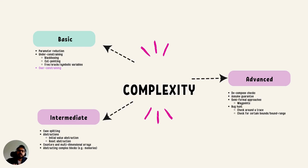Formal verification can be really complex and a time-consuming process, especially if the design is very big and complex. There are a number of techniques that you can use to reduce the complexity of designs while doing formal verification. I'm broadly dividing them into three categories: basic, intermediate, and advanced. In the last two videos we discussed four basic techniques: parameter reduction, cut pointing, black boxing, and the use of symbolic variables.